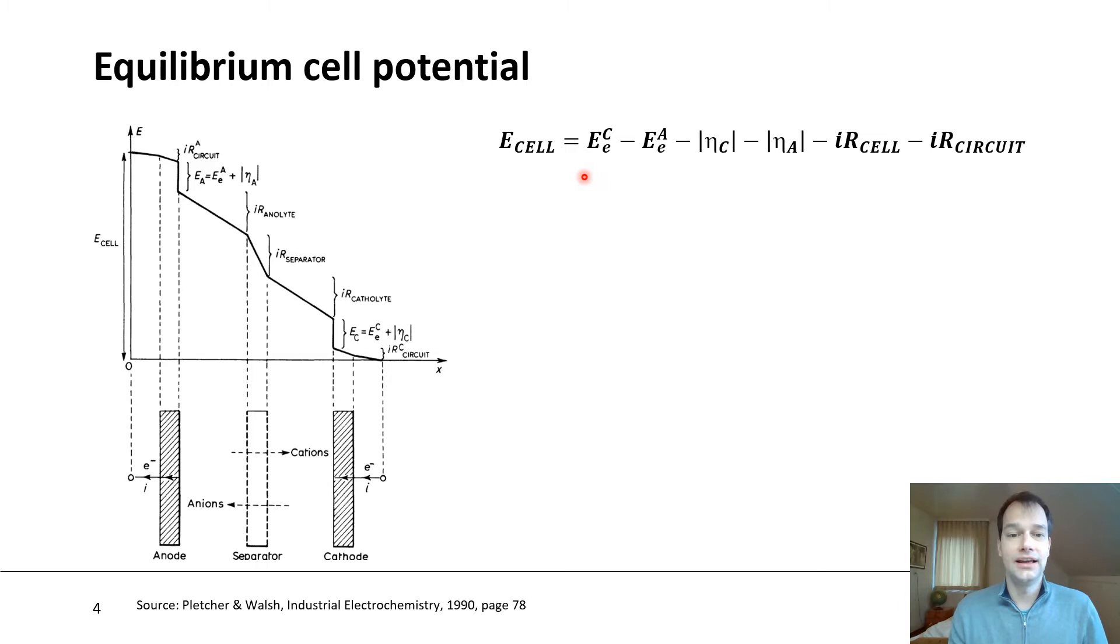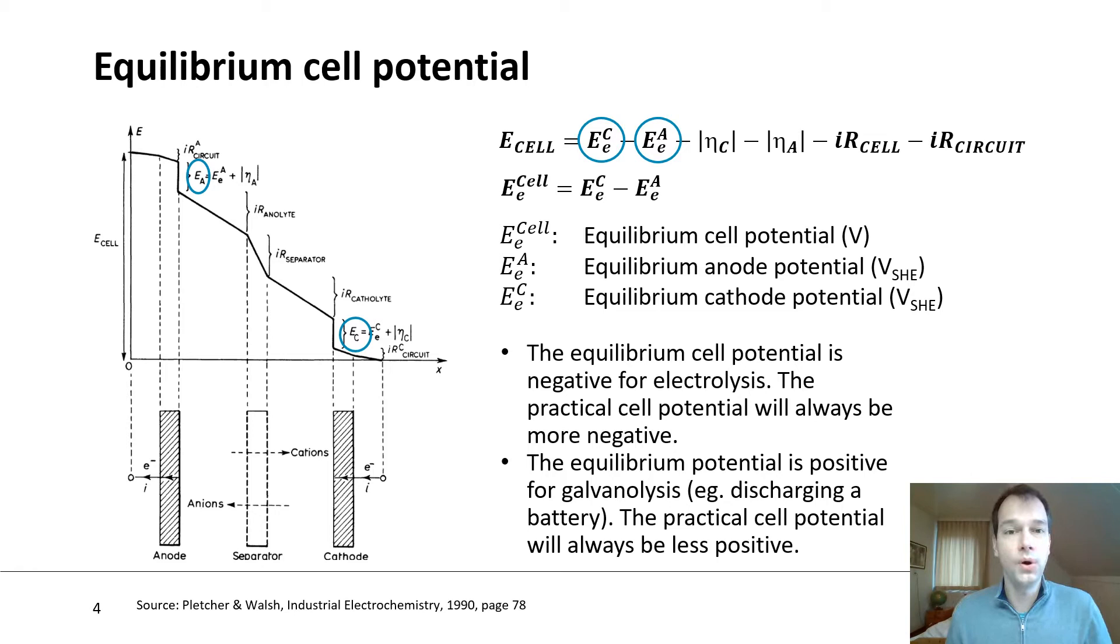As you can see in the equation on the right, the cell potential consists of the thermodynamic contributors, the overpotentials which we will discuss in module 3, and the ohmic contributors which we will discuss in module 4. The focus of this first screencast is on the equilibrium cell potentials. You can see here that there are two values, one for the cathode, one for the anode. Together, they are the equilibrium cell potential.